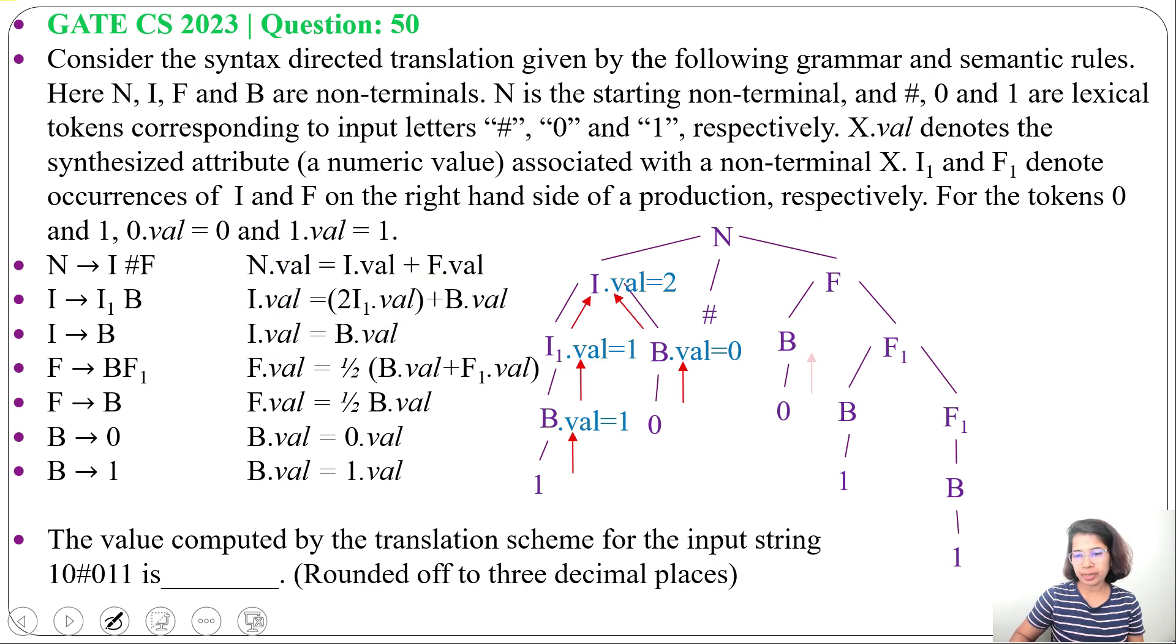Now, this 0 value will pass to B value. B value equals 0. Here, this B value equals 1. Here, this B value equals 1. Now, F value equals half of B value. Here, B value equals 1. So, half of 1 will be 0.5. F1 value equals 0.5.